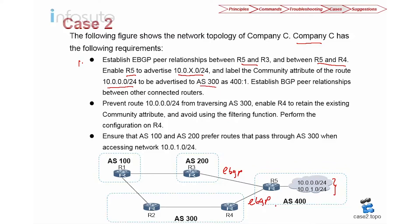When R5 advertises to AS300 for 10.0.0.0, we are going to use a community of 400:1. We are going to use an IP prefix to match 10.0.0.0 and attach a 400:1 community to send to R4. Since this is a community, we have to advertise this to R4.